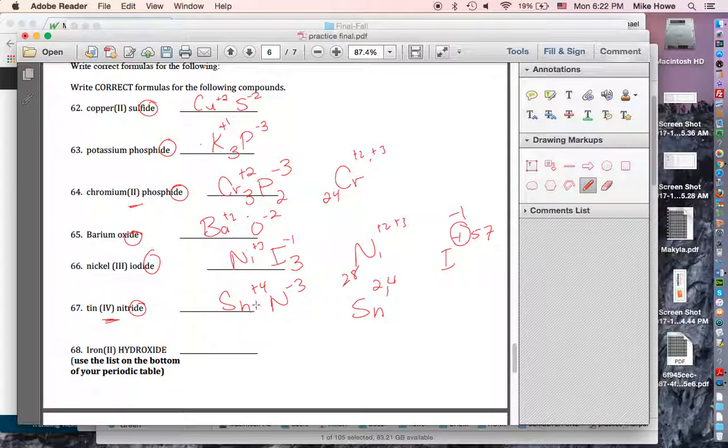Tin is +4. Nitrogen is -3. You've got to find a common multiple. The lowest number divisible by both 4 and 3 is 12. So I need to multiply 4 by something to get 12. I need to multiply 3 by something to get 12. So it's Sn3N4.